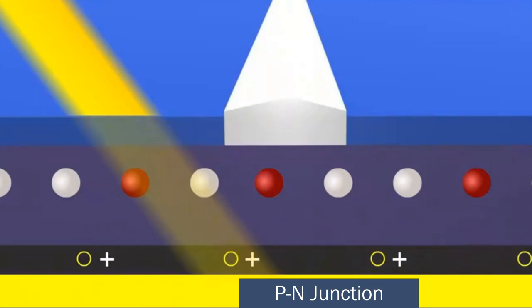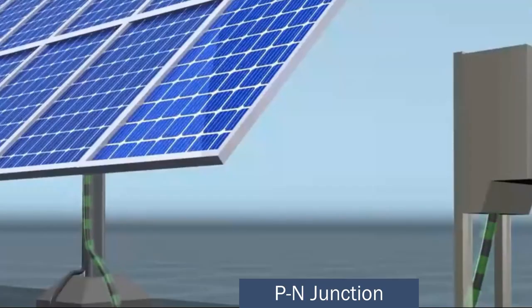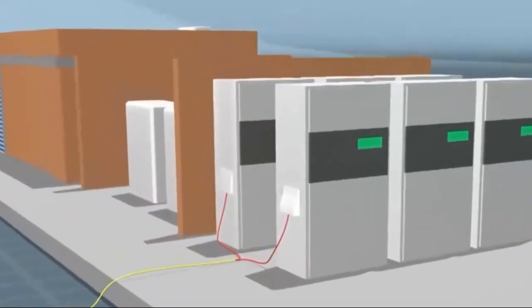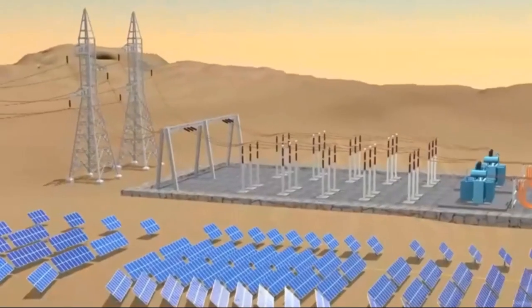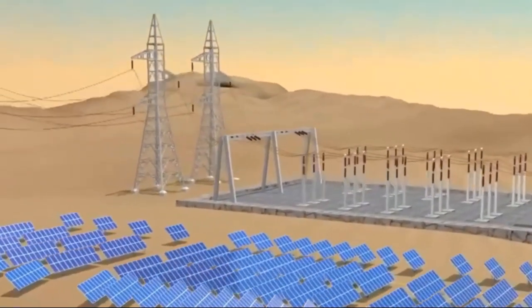In a solar panel, the electric field formed by the P-N junction helps guide electrons towards the N-type layer, where they can be collected for power generation. They flow continuously in one direction, so an inverter is needed to convert the direct current into alternating current. Thus, the solar panel converts light into electricity.